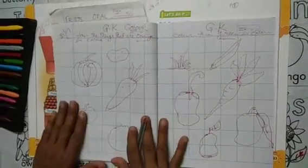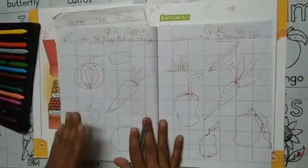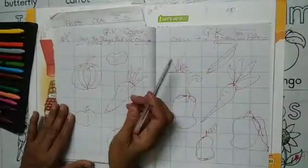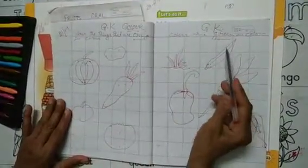Hey kids, this is GK period. Your exam is coming here. Today, color the things that are orange and green.